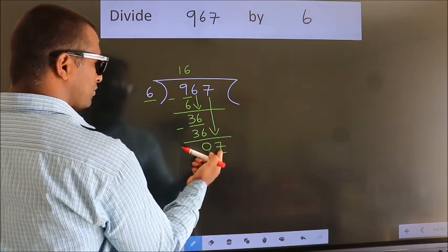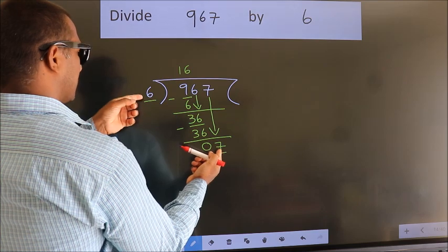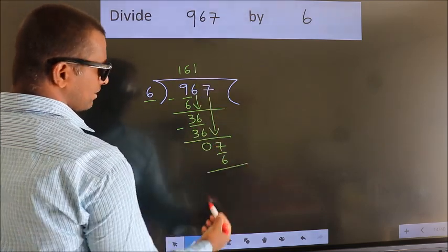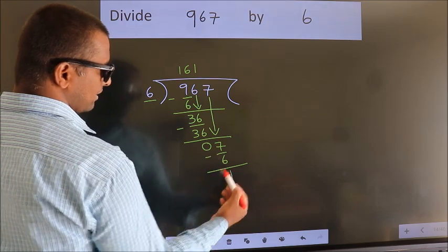A number close to 7 in the 6 table is 6 times 1, 6. Now we subtract. We get 1.